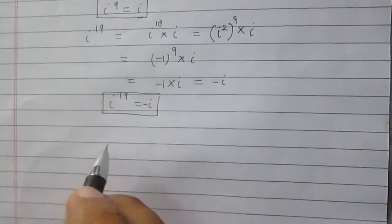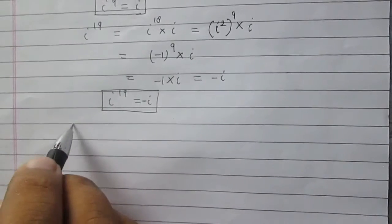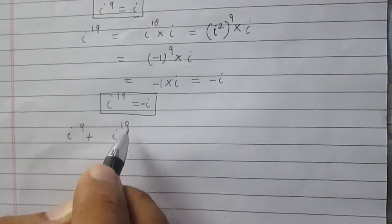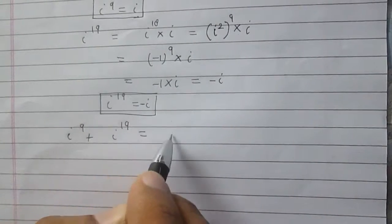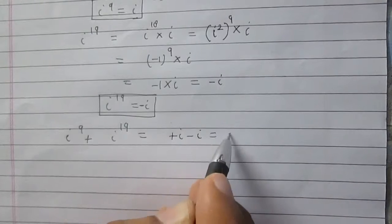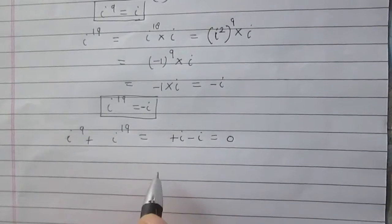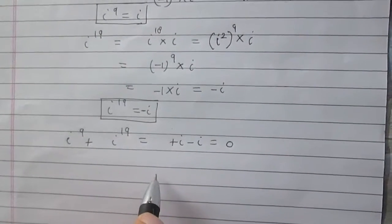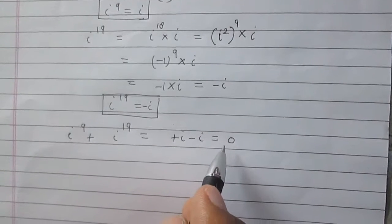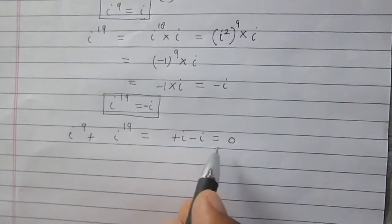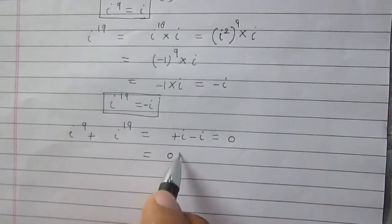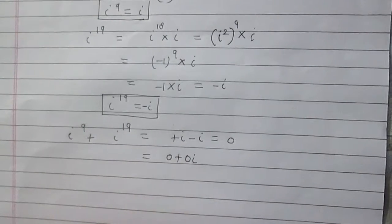Now consider iota raised to power 9 plus iota raised to power 19. It is plus iota and minus iota, which is 0. So the final answer is 0, and it can be expressed in a plus b iota form as 0 plus 0 iota.